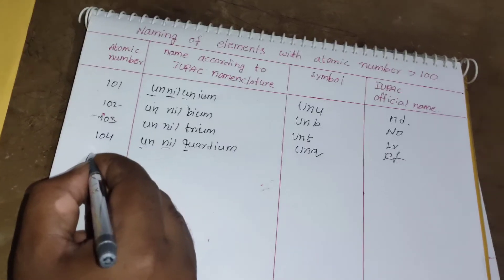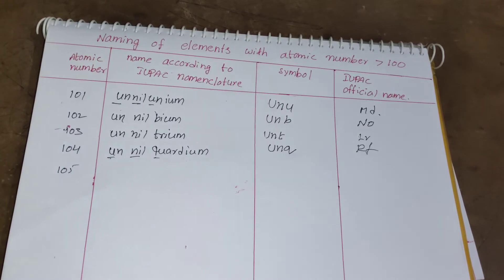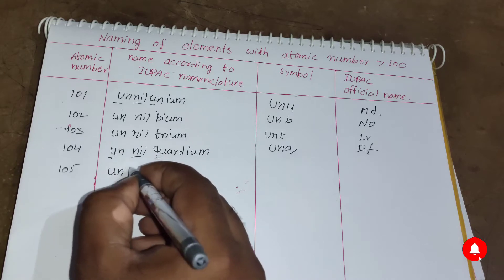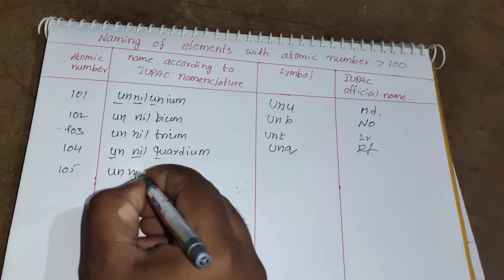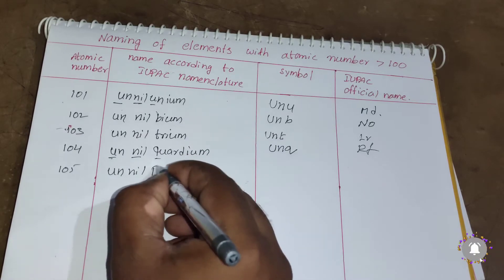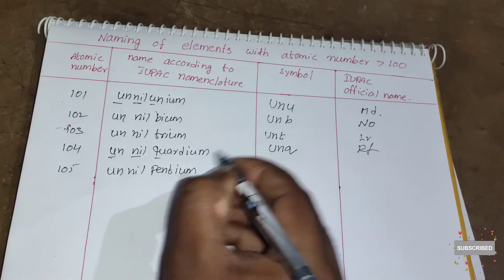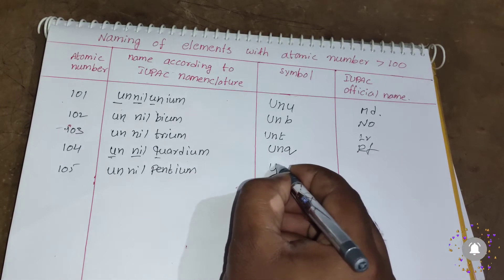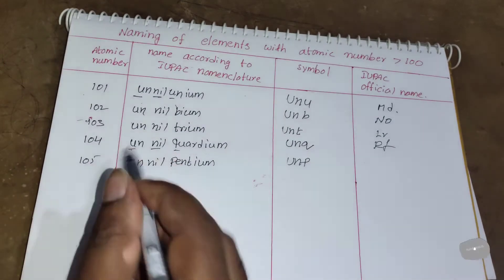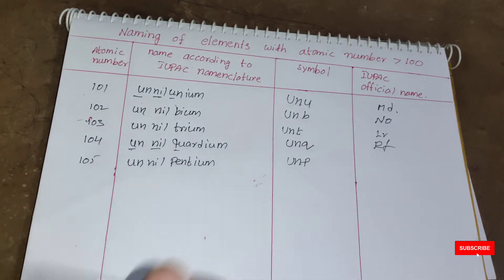For element 105: 1 = un, 0 = nil, 5 = pent, plus '-ium' gives Unnilpentium. The symbol is Unp. Note that for understanding purposes spaces are shown between root words, but in practice you write them continuously without gaps.